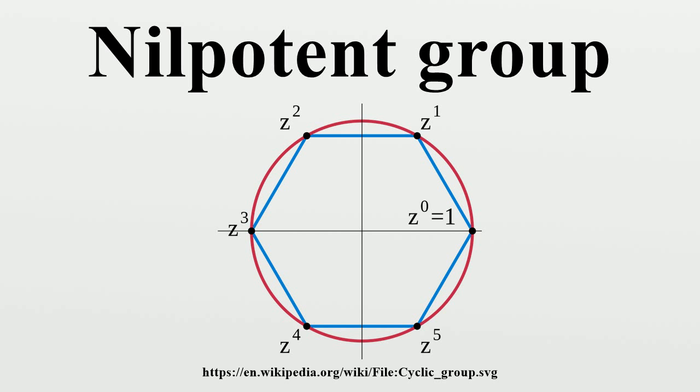They are proven to be nilpotent if they have finite order, and are conjectured to be nilpotent as long as they are finitely generated. An abelian group is precisely one for which the adjoint action is not just nilpotent, but trivial.